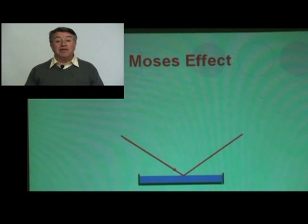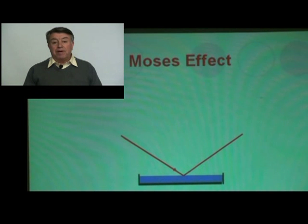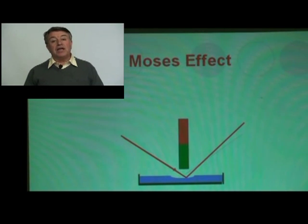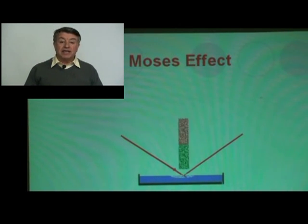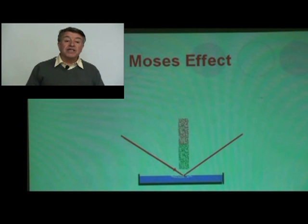The magnetic field repels them, producing something similar to what is described in the Bible — Moses opened the waters of the Red Sea to let his people walk across. Here we will not open waters, but we will produce a depression in the water surface, which will be enough to deflect the reflection of a laser beam. We will notice this by the motion of a luminous spot on the screen following the motion of the magnet.